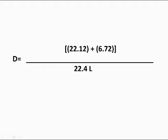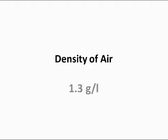Now, this calculates down to 22.12 plus 6.72. We do the math again, and this brings us to 28.84 grams over 22.4 liters, and we're going to divide that out. And as you can see, the density of air is 1.3 grams per liter.